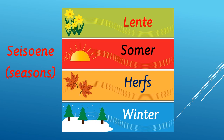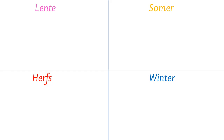Okay, so those are our seasons in Afrikaans. Let's move on. What I need you to do now is go and find a blank piece of paper — it can have something on the other side, as long as there is plain white on one of the sides. You can recycle paper. Go and find me a blank piece of paper. Press pause on the video while you do so.